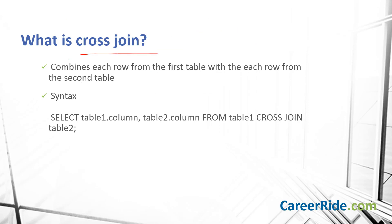What is CROSS JOIN? A CROSS JOIN produces the Cartesian product of two tables. A CROSS JOIN will produce results which combine each row from the first table with each row from the second table. It is found when each row from one table is joined to all rows in another table. In the syntax, table 1 has been cross-joined with table 2, which means each row of table 1 will join with each row of table 2. If the first table contains 3 rows and the second table contains 4 rows, then the result set will be 3 × 4 = 12 rows.